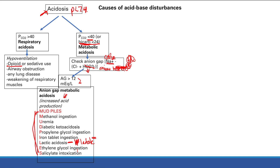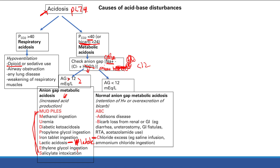If the anion gap numbers are less than 12, this is called a normal anion gap metabolic acidosis, or non-anion gap metabolic acidosis. The problem here is either just retention of H+ or overexcretion of bicarb. I use the mnemonic ABC — it goes most directly to how these causes produce this non-anion gap metabolic acidosis.